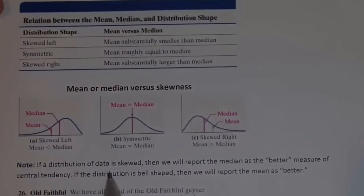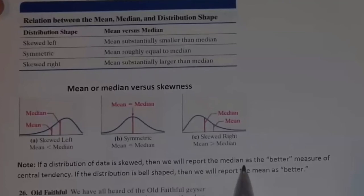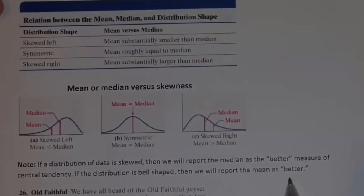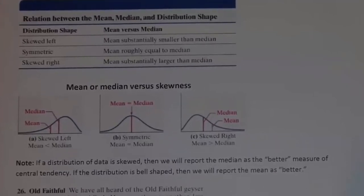If a distribution is skewed, we will report the median as the better measure of central tendency. If the distribution is bell-shaped or uniform, we will report the mean as better. You're going to be asked which is better to describe the measure of center — the median or the mean — and the way to tell is by determining whether the distribution is symmetric or skewed.